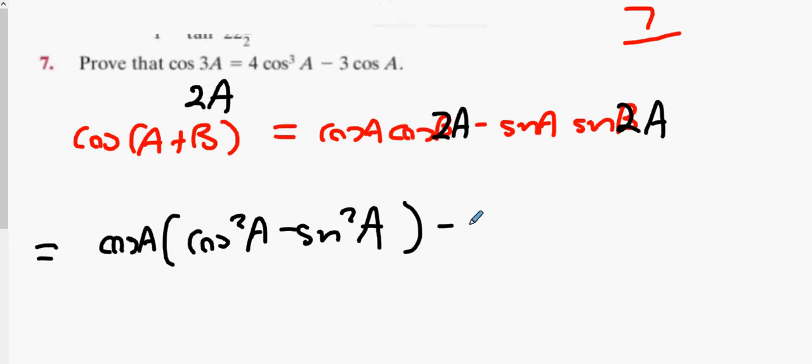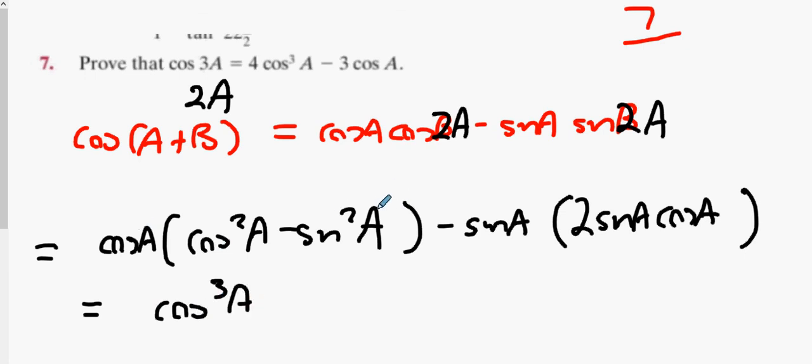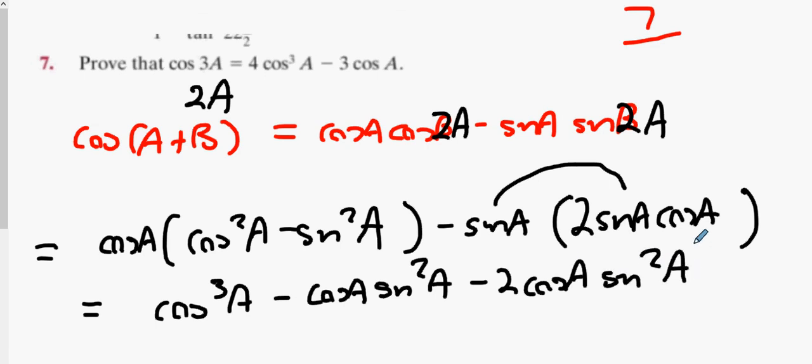What about the next part? What can I do with sin 2A? I'm going to mill all this together and see what I can come up with. What's cos A times cos²A? Cos³A. What's cos A times minus sin²A? Minus cos A sin²A. What about the next one then? Sin A multiplied by 2 sin A cos A. 2 sin²A cos A. Is anybody on board with that so far?